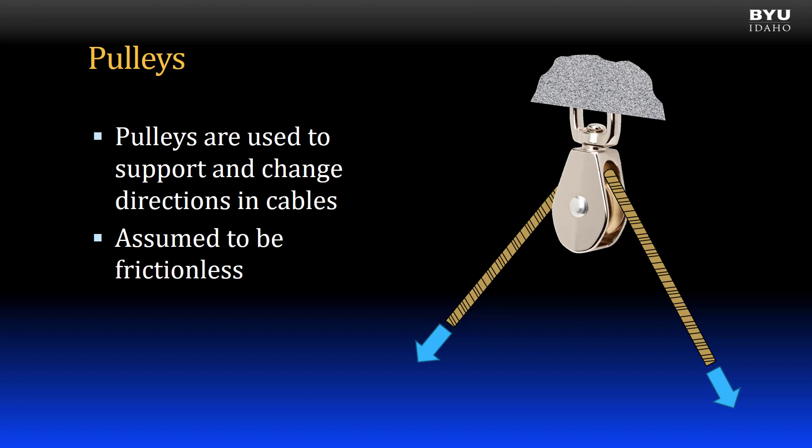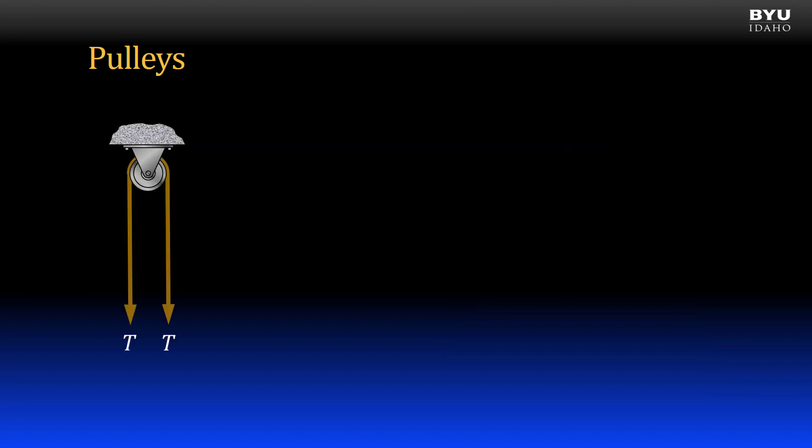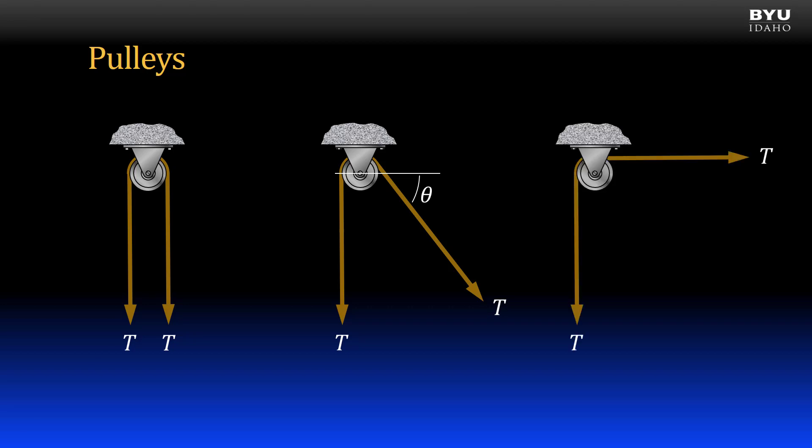Let's move on to pulleys. Pulleys are used to support and change directions in cables. We assume that all the pulleys we encounter in this class are frictionless. A couple of key things to know when working with pulleys. First, the tension in the cable on one side of the pulley wheel is equal to the tension in the cable on the other side of the pulley wheel. It does not matter what direction the cables on either side of the pulley are acting in. We always take the force on both sides to be equal. But note how the pulley changes the force direction in the cable.